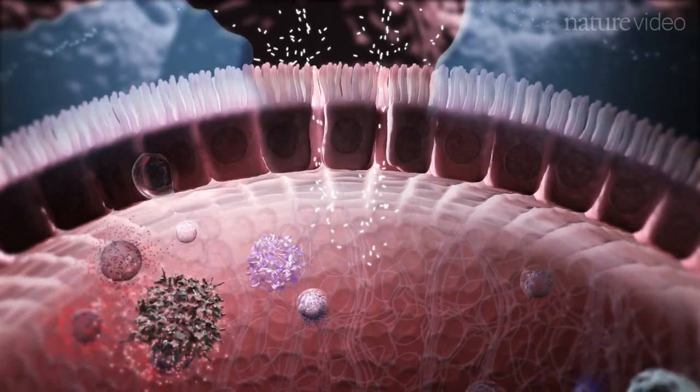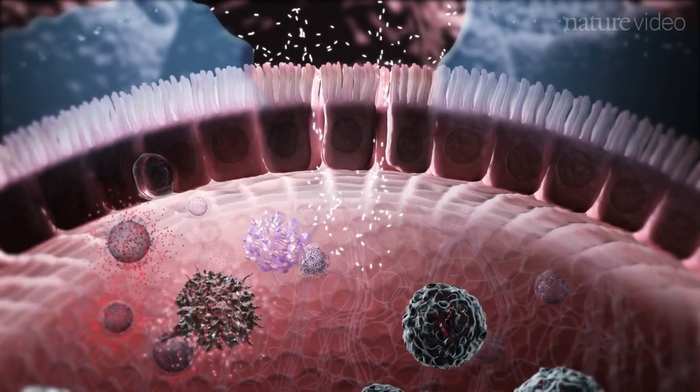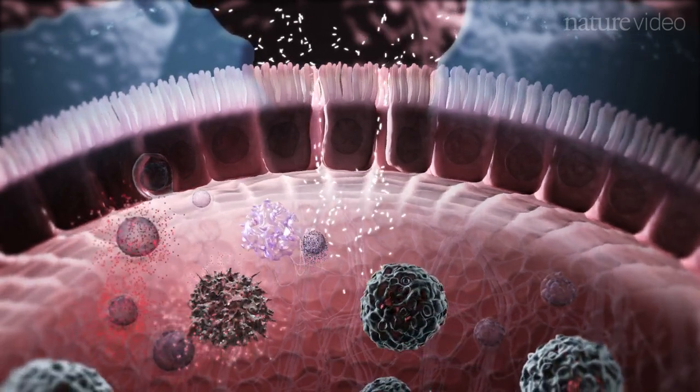Soon after the effector T-cells have arrived, a voracious phagocyte called a neutrophil is recruited. Neutrophils are critical for the clearance of bacteria.